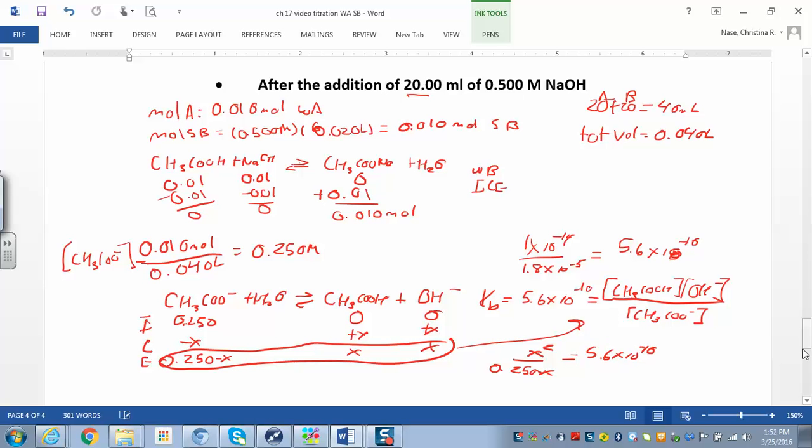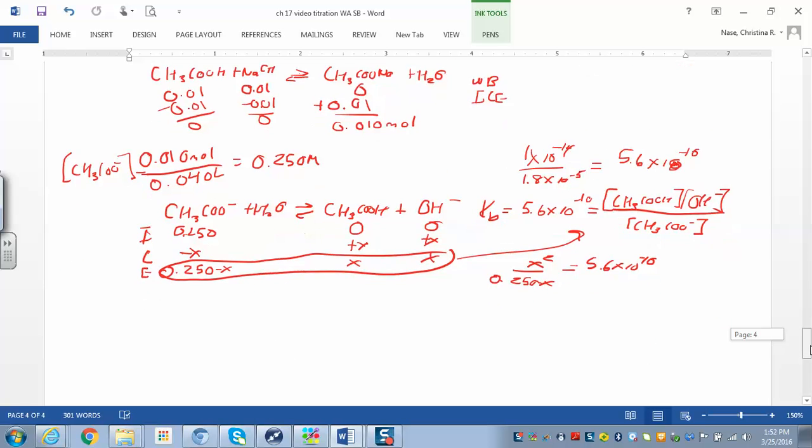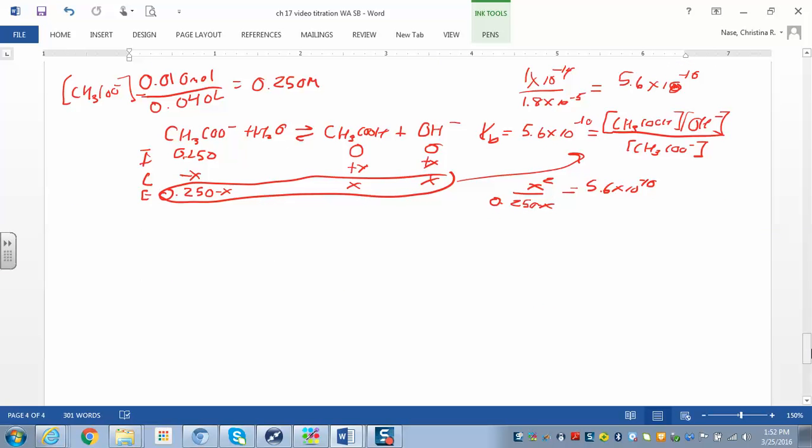Can we make that approximation? I think we can. 10 to the negative 10, sure, it's going to be really small. So we'll get rid of the X on the bottom and then solve for your X. We get X squared is 5.6 times 10 to the negative 10 times 0.250. Take the square root of both sides and solve for X. And when we do that, we get X is 1.2 times 10 to the negative 5, and that's equal to our hydroxide concentration.